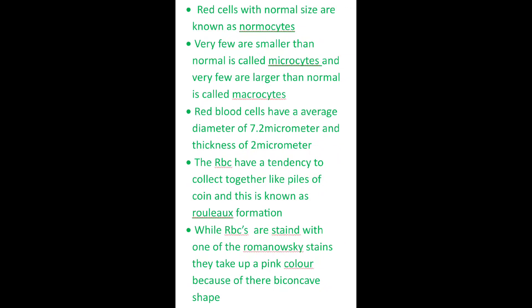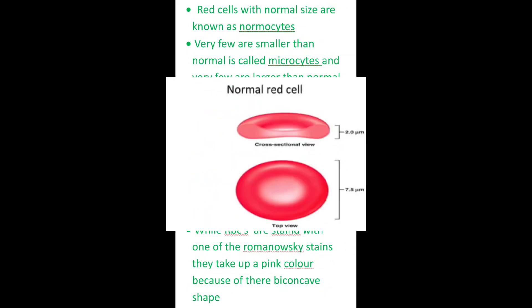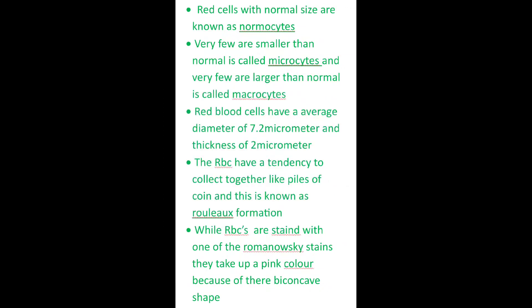Red blood cells have an average diameter of 7.2 micrometers and a thickness of 2 micrometers.